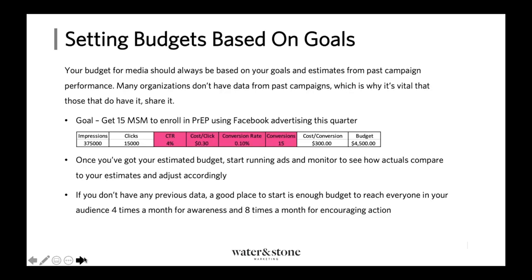Once we define our priority population and have our goals and objectives, we have to figure out what our budget should be. A lot of times you're going to start with one thing or the other — either a bunch of goals and trying to figure out a budget, or you already have a budget and need to figure out what you can achieve with it. We're going to start with setting a budget based on goals, because more often than not that's where I'm beginning with organizations in the social marketing space.